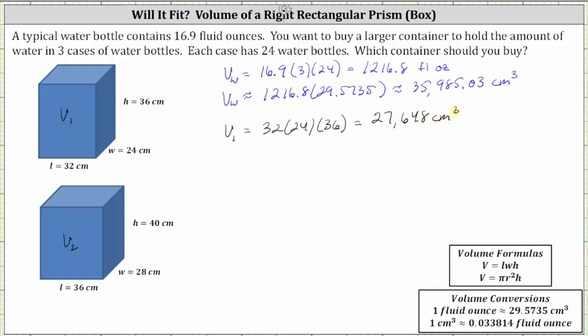Notice how this volume is less than the volume of the water, and therefore this first container is too small to hold the amount of water.